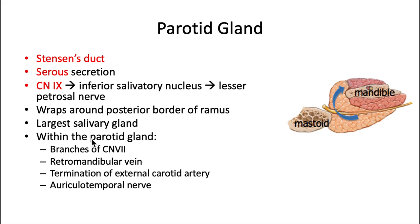There are a couple of important pieces of anatomy located within the parotid gland: the five main branches of the facial nerve — temporal, zygomatic, buccal, mandibular, and cervical. Remember 'To Zanzibar by motor car.' We also have the retromandibular vein, the termination of the external carotid artery, and the auriculotemporal nerve of V3. So a lot is going on with the parotid gland.